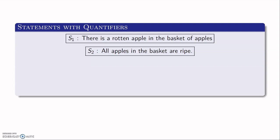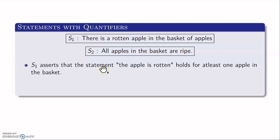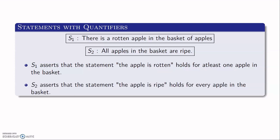Now look at the second statement. S2 reads: all apples in the basket are ripe. To say that S2 is true, you will have to pick up each and every apple in the basket and show that it is ripe. S2 will be a true statement only when all the apples in the basket are ripe. Whereas S2 asserts that the property 'the apple is ripe' holds for each and every element in the basket.